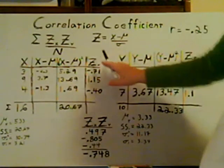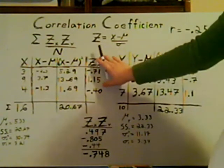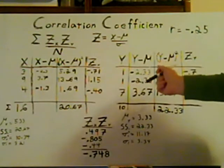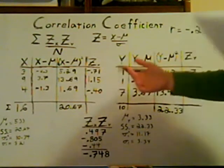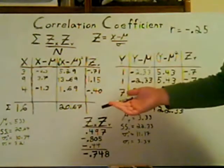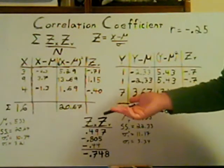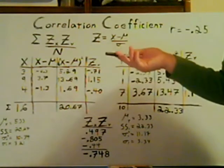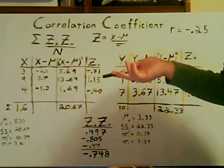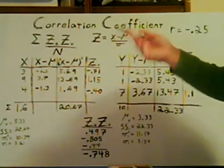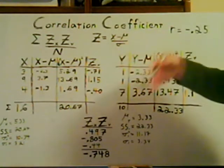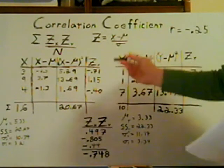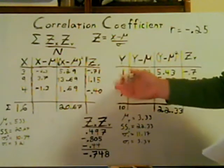For example, the number of dice one owns and the number of tabletop games that they own. A researcher wanted to see if there was any correlation, so they took three of their best friends, counted how many dice they could find in their room, and then counted how many tabletop games they had.